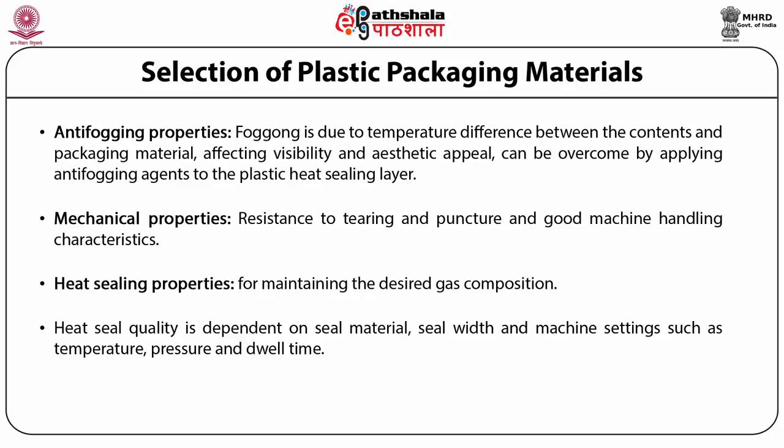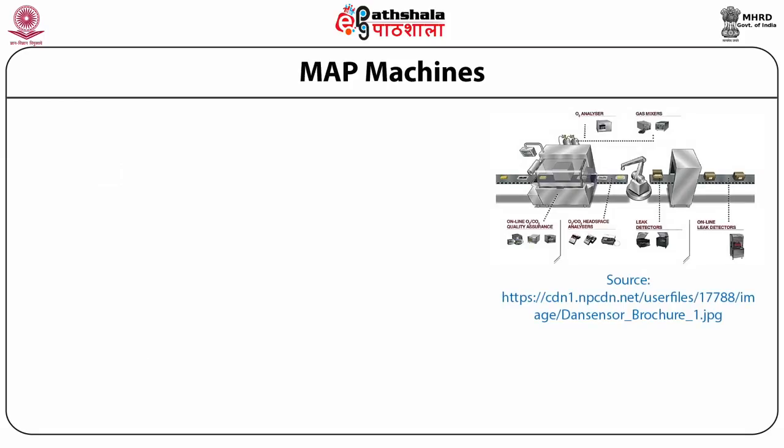The function of MAP machines is to retain the product on a thermoformed or pre-formed base tray or within a flexible pouch or bag, modify the atmosphere, apply a top web if required, seal the pack, and cut and remove waste trim to produce the final pack. Different types of MAP machines are discussed below.